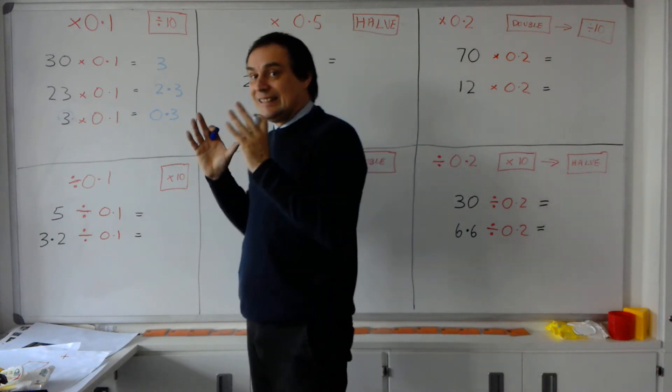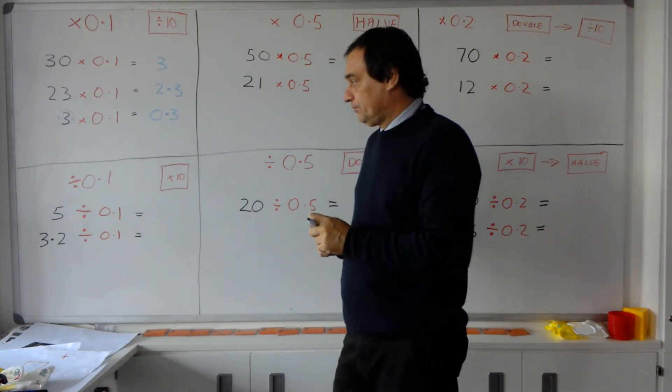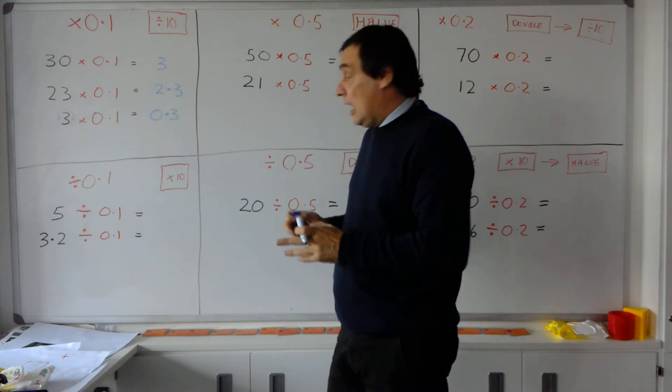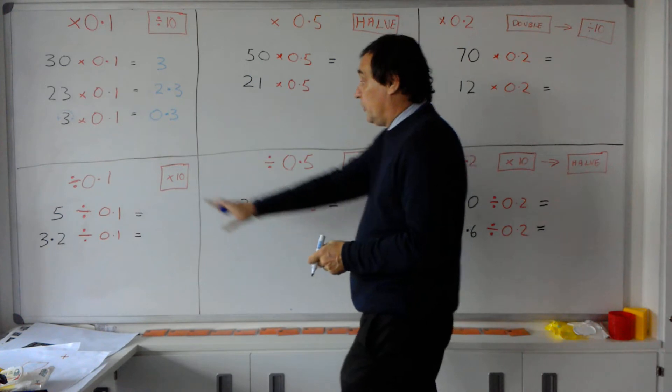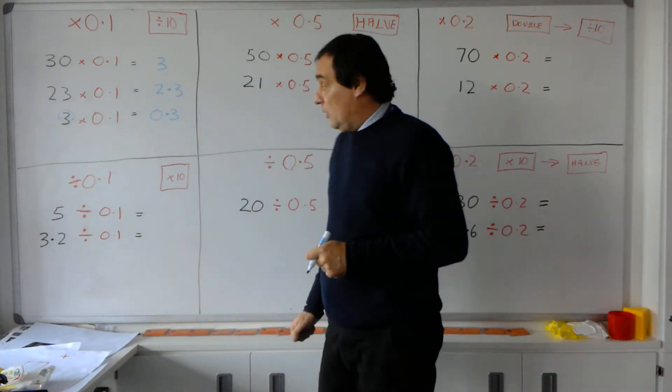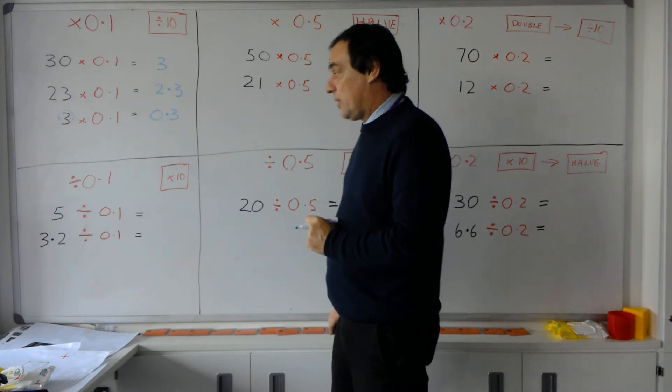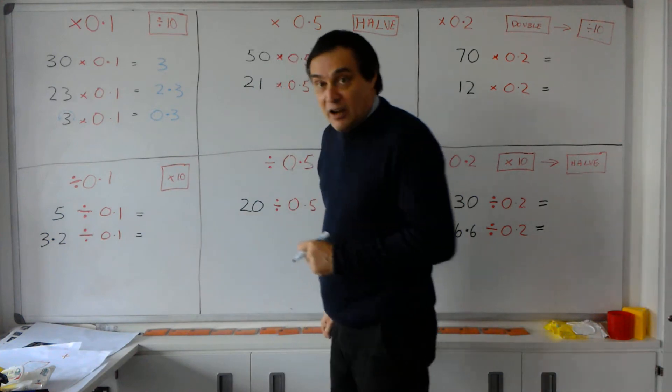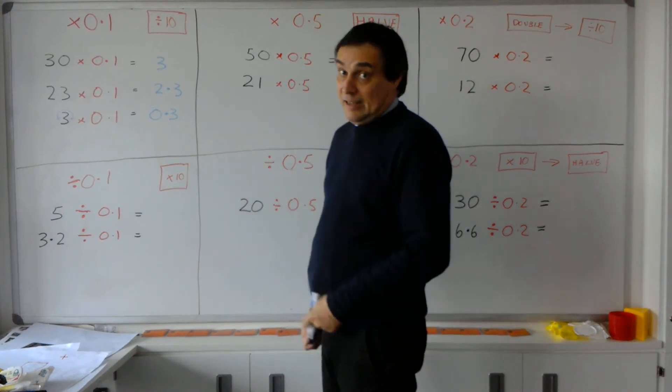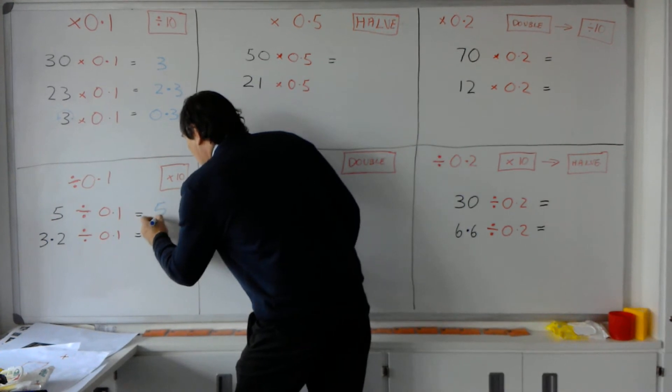Equally, if we're going the other way around or going backwards, so if we're dividing by 0.1, it is exactly the same thing as multiplying by 10. So if you see a sum 5 divided by 0.1, all it means is 5 times 10, and 5 tens are 50.